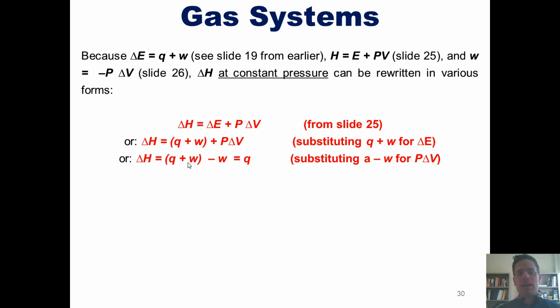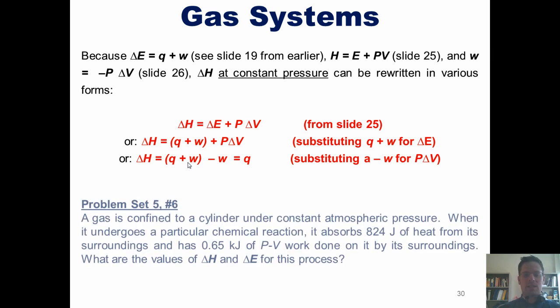Now I realize this is many equations I've thrown at you to learn. Please rest assured that on the exam and problem sets, I will give you all the equations that you need and will not require you to memorize them. This lets us finish with a final example. A gas is confined to a cylinder under constant atmospheric pressure. When it undergoes a particular chemical reaction, it absorbs 824 joules of heat from its surroundings and has 0.65 kilojoules of pressure volume work done on it by its surroundings. What are the values of delta H and delta E for this process?